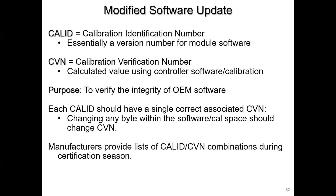With the state's beta database getting bigger and bigger with so many of the same vehicles, they're able to pull this together and verify the integrity of software — that nobody has tampered with it — because tampering with that software is an emissions tamper, subject to a $2,500 fine under federal law. When you modify it, you're changing the bits in there, and that changes the CVN.